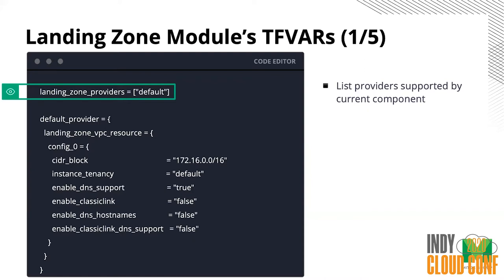For example: for my master account I want to set up only AWS Organizations. In my core account, I actually don't need to set up anything AWS Organization-related. So in my entire solution, if I have maybe 20 providers, in this particular TFVars file for AWS Organizations I only want to run that Terraform for my master account, which is the default in our case, and I don't need to set up organizations in the core accounts.